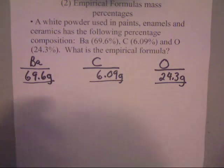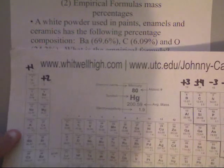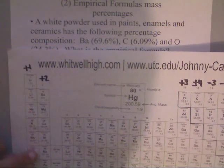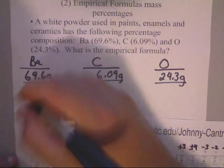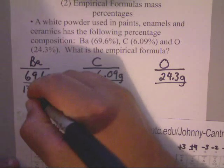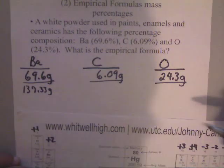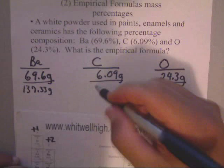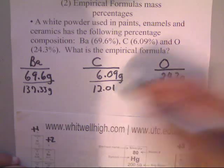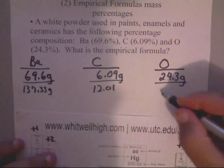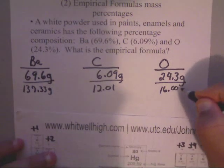So, on the periodic table, it says that Ba is 137.33, so that's 137.33 grams. Carbon is 12.01, and the oxygen is, of course, 16.00.